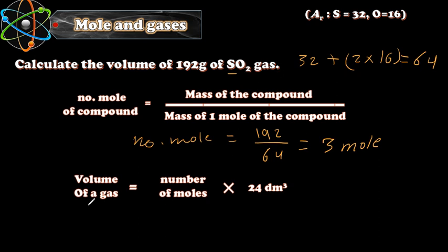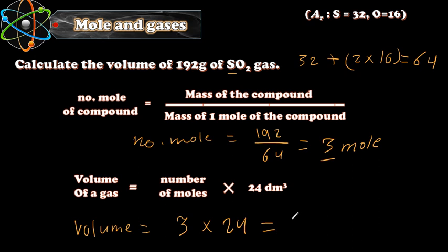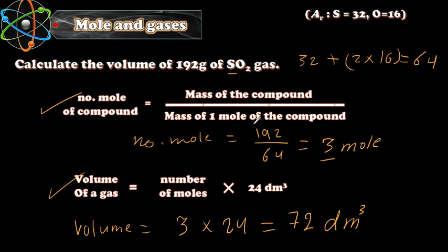Now that we have 3 moles, volume of gas equals number of moles times 24 dm³. So volume equals 3 times 24 dm³, which equals 72 dm³. This is how we find the volume of a gas when we are given the mass instead of the number of moles: first find the number of moles, then apply the gas volume formula.